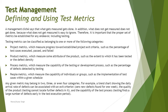In the next tutorials you will understand more about different metrics with examples showing how they fit into these categories. Any given metric may belong to two, three, or even all four categories. For example, a trend chart showing the daily arrival rate of defects can be associated with the exit criterion of zero new defects found for one week, the quality of the product where testing cannot locate further defects, and the capability of the test process where testing finds a larger number of defects early in the execution period. Some metrics share categories, while others are specific to a particular reason.